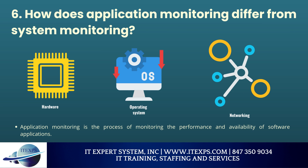Question 6: How does application monitoring differ from system monitoring? Application monitoring is the process of monitoring the performance and availability of software applications, which can include monitoring the application itself, the underlying infrastructure, and the user experience. System monitoring, on the other hand, is the process of monitoring the performance and availability of computer systems, which can include monitoring the hardware, the operating system, the network, and the applications running on the system.